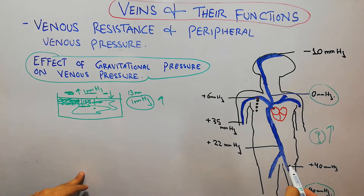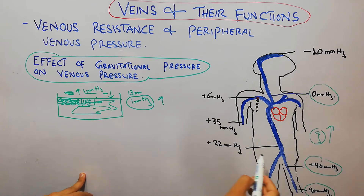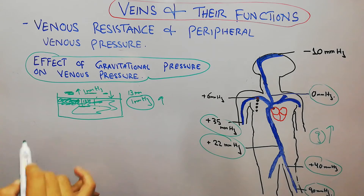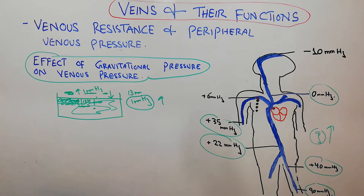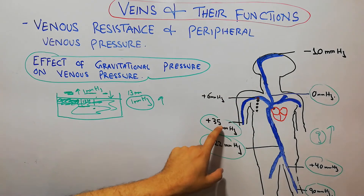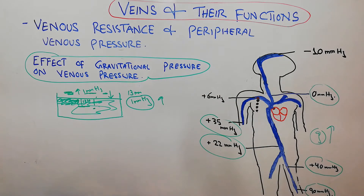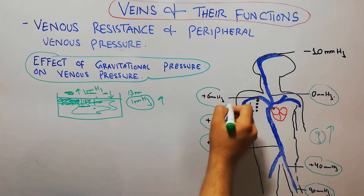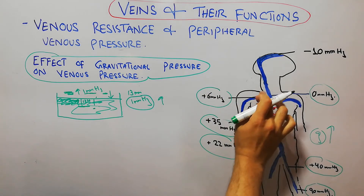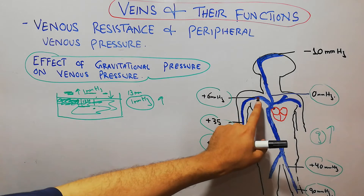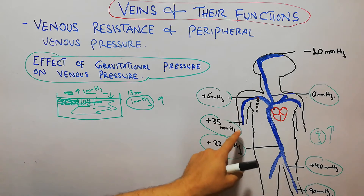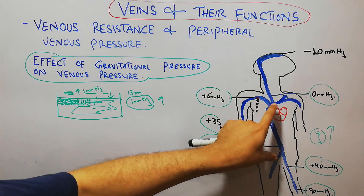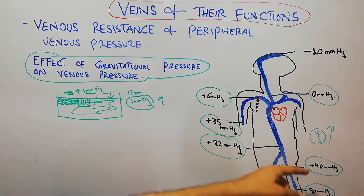At the level of the thighs, the pressure is around 40 mm of mercury. At the level of the abdomen, it is around 22 mm of mercury. At the level of the limbs, it is about 35 mm of mercury. The pressure in the limbs is slightly higher because some pressure is contributed by the first rib — about 6 mm of mercury — when the vein crosses the first rib. Then the effect of gravity also adds to the pressure. Overall, the pressure in the venous system between the right atrium and the toes is between 0 and 90 mm of mercury.